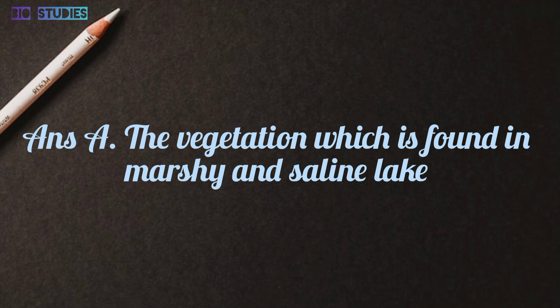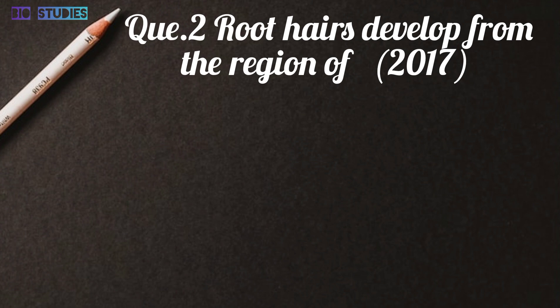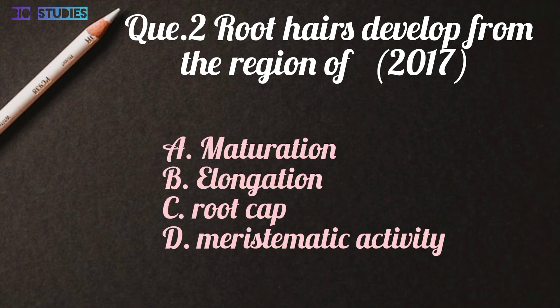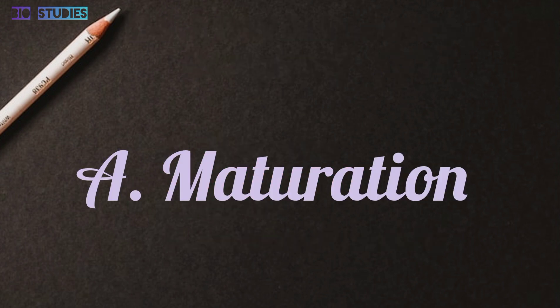Question number 2: Root hairs develop from the region of — options are: maturation, elongation, root cap, or meristematic activity. The right answer is A: maturation.